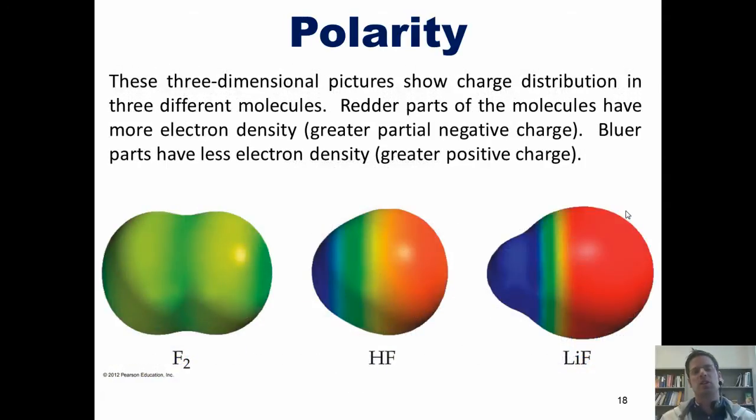These three-dimensional pictures show charge distribution in three different molecules. Redder parts of the molecules have more electron density, that is, a greater partial negative charge, and bluer parts of the molecule have less electron density, that is, a greater positive charge.